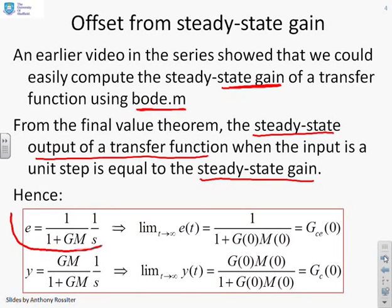Here's the equation for our offset signal: E equals 1 over 1 plus GM times 1 over s. So we're assuming that the target is 1 over s. When you apply the final value theorem and find the limit as t goes to infinity of e(t), you get GCE(0), where GCE is the transfer function 1 over 1 plus GM.